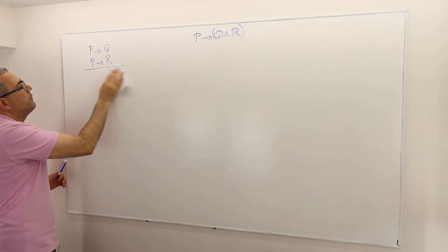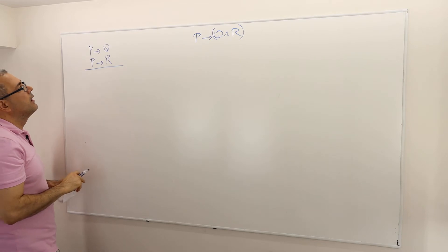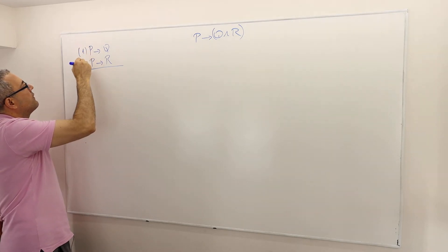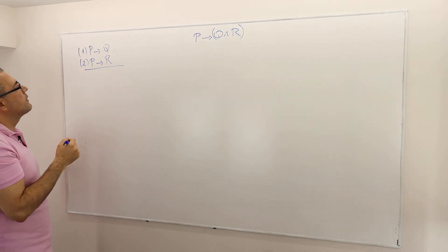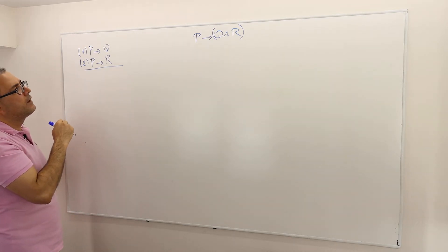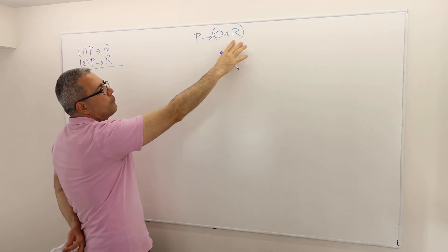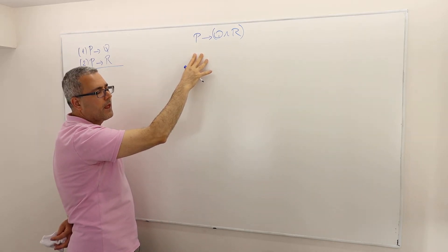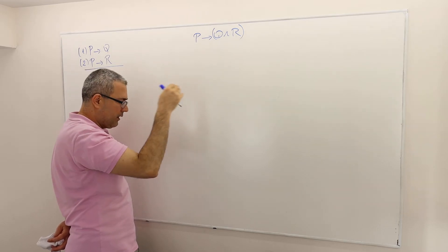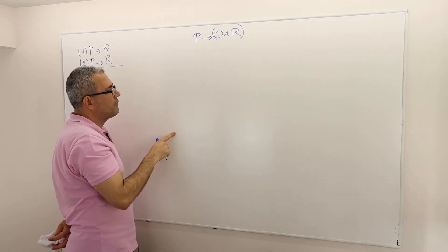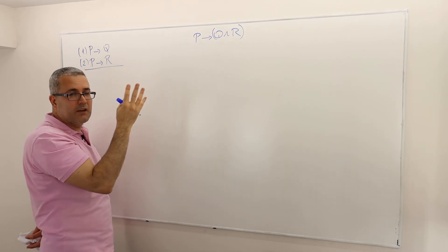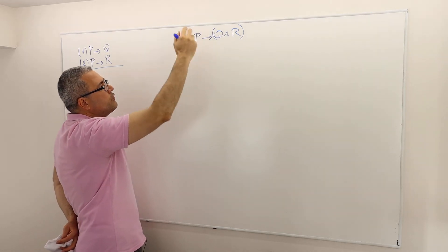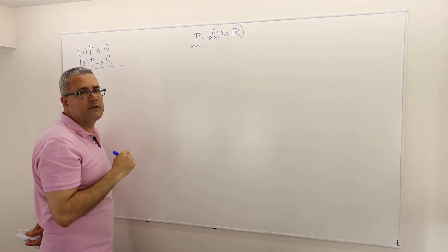I'll clean this part because I'm going to start writing my logical deduction. This is premise one, this is premise two. If you are trying to prove a conditional conclusion, then you start with assuming the first part — P.